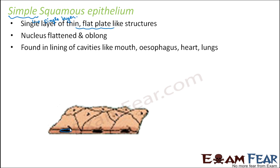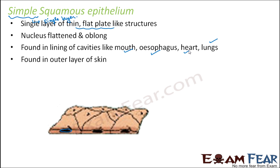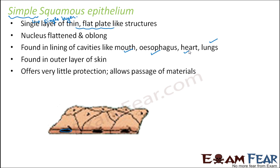At all these locations — mouth, esophagus, heart, lungs — transport of substances takes place through a selectively permeable membrane. In the lungs, transport of oxygen happens. In the mouth, transfer of nutrients happens through the membranes. So for each of these organs, there is some transport of substances happening through their lining. Because of that, a thin flat layer of cells is preferred there, and that is why simple squamous epithelium is found in all these locations.